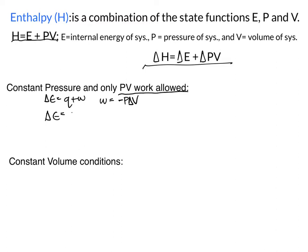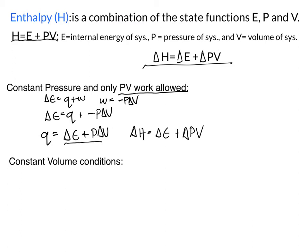If we plug in our work variable and substitute the pressure-volume work variable, then solve for Q, we end up with an equation where Q is exactly the same as our enthalpy value. Remember, this is at constant pressure — the delta only applies to our delta V, or volume variable. So delta H equals Q at constant pressure.